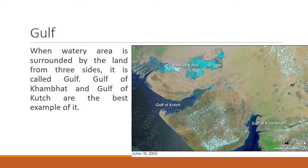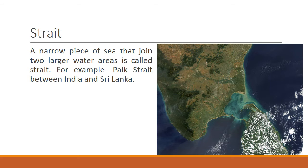After bay, let's study about gulf. When a watery area is surrounded by land from three sides, it is called a gulf. The Gulf of Khambhat and Gulf of Kutch are the best examples. From the map, we can clearly see that the Gulf of Khambhat has just one opening to water while the other three sides are surrounded by land. The same applies to the Gulf of Kutch.